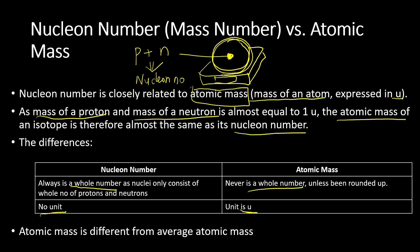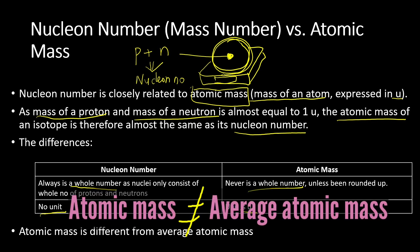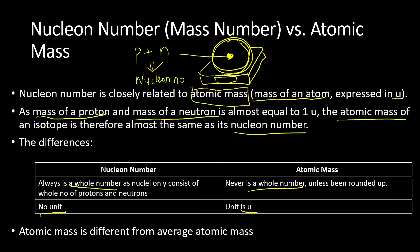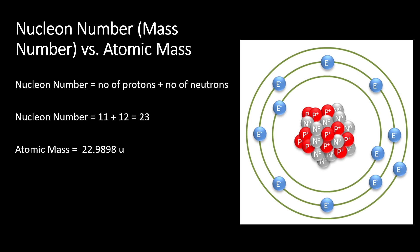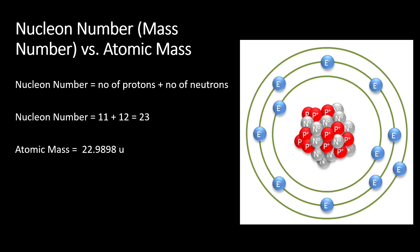One more thing to remember: atomic mass is different from average atomic mass, which I will discuss later. To determine the nucleon number for this atom, we count the number of protons and neutrons in the nucleus. For this atom, you will get 11 protons and 12 neutrons, giving a nucleon number of 23. But if you weigh this atom, you get an atomic mass of 22.9898 U.